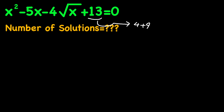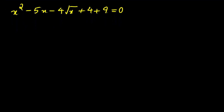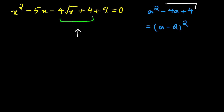Let's rewrite our equation: x squared minus 5x minus 4 times the square root of x plus 4 plus 9 equals 0. Now these two terms — negative 4 times the square root of x and plus 4 — may be familiar, because a squared minus 4a plus 4 is a perfect square equal to the quantity a minus 2 all squared. Since a here is the square root of x, a squared must be x, so we need to add x to complete the square.